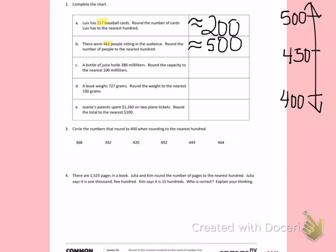Letter C, a bottle of juice holds 386 milliliters. Round the capacity to the nearest 100 milliliters. 386 is what I'm thinking about, and I'm still picturing a number line in my head with 300 at the bottom and 400 at the top, 350 as my halfway number. 386 would be past the halfway number, so it is approximately 400 milliliters.